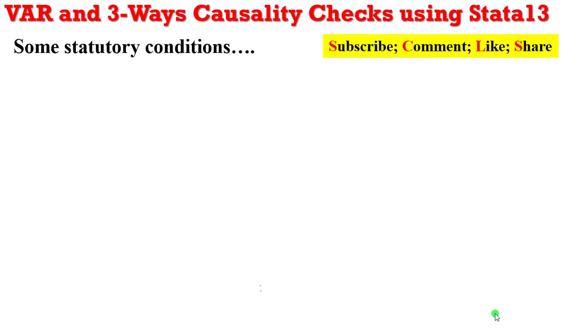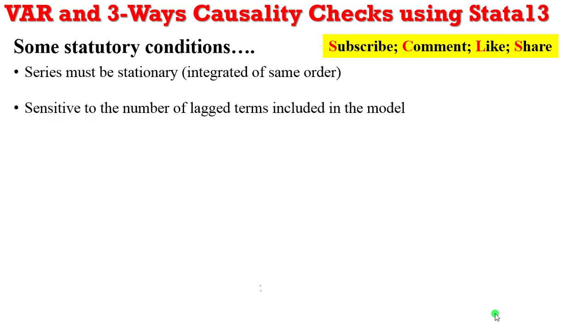So what are some statutory conditions that must be fulfilled before you can engage causality checks within the VAR framework? Number one, the series in question must be stationary, integrated of the same order. They must be stationary at first difference, definitely not at second difference. The number of lags you are going to use in that model must be carefully selected using the information criterion. Then make sure that the error terms entering the causality test are not correlated.